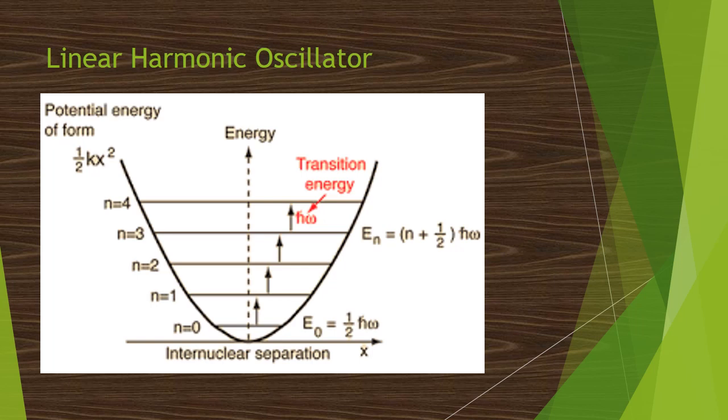The eigenvalue of the oscillator En is equal to n plus 1 by 2 into h cross omega. So now n is equal to 0, 1, 2, 3, 4, etc. We have to substitute the value of n equal to 0 into En. Here E0 is equal to 1 by 2 h cross omega, which is the zero point energy.